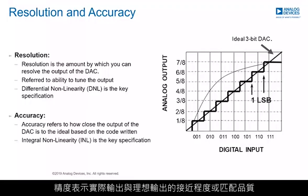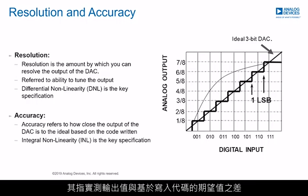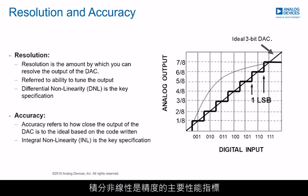Accuracy represents the quality or closeness of each output to the ideal output. It refers to the difference between the measured output value and the expected value based on a programmed code. Integral nonlinearity (INL) is the key specification for accuracy.